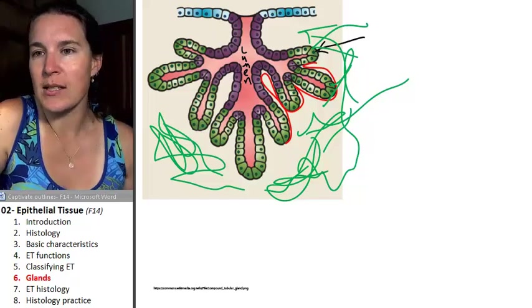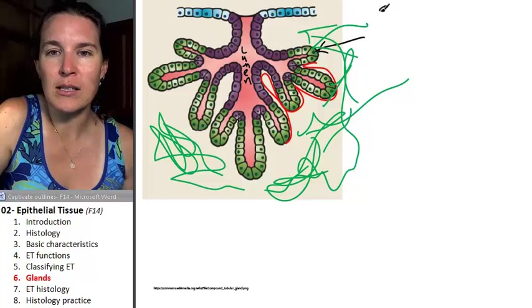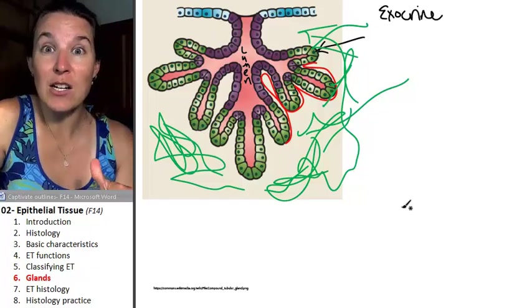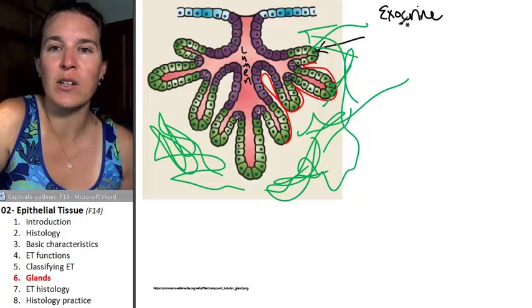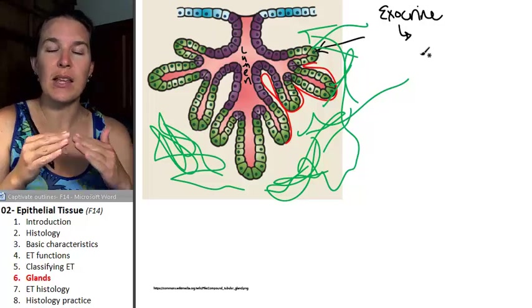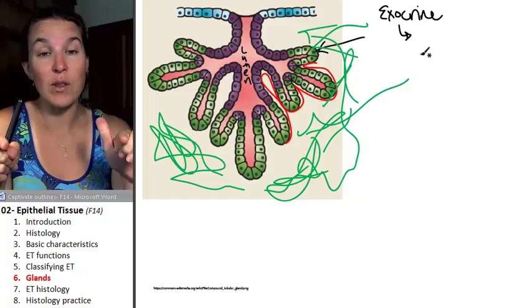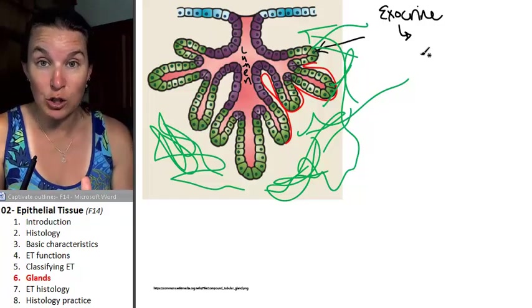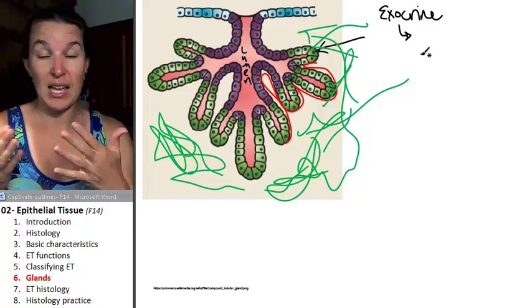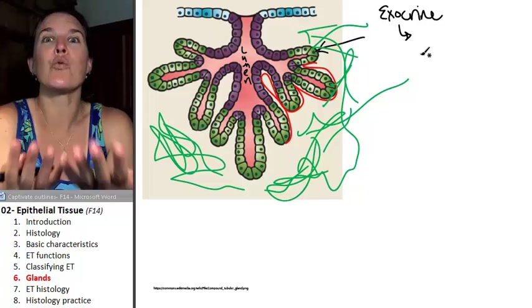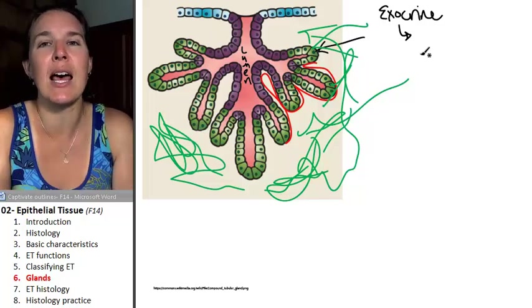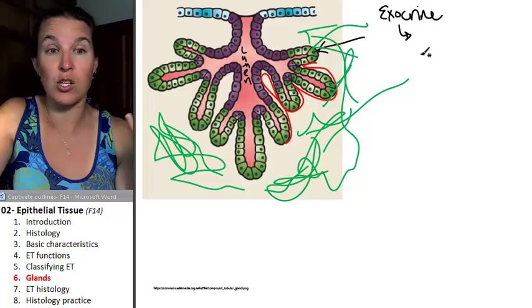We have two types of glands. There are exocrine glands and endocrine glands. But let's look at exocrine glands first. The difference. They both secrete substances. So the tissue, the epithelium lining the lumen in any gland is secreting substances into that lumen to be barfed out into the universe somewhere.